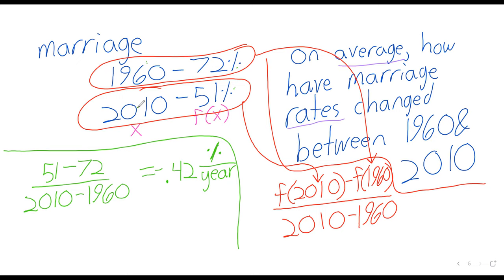So negative 0.42% per year. On average, the marriage rate has been going down. And that's average rate of change. Does anybody have any questions on this material?